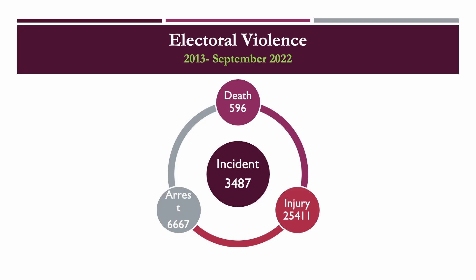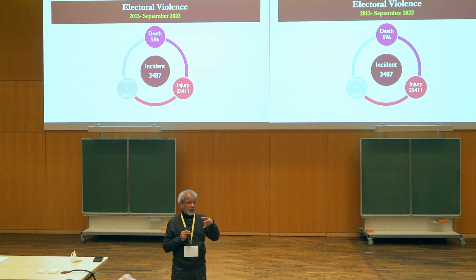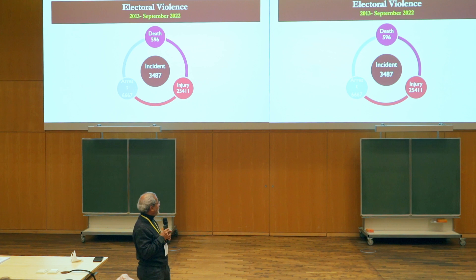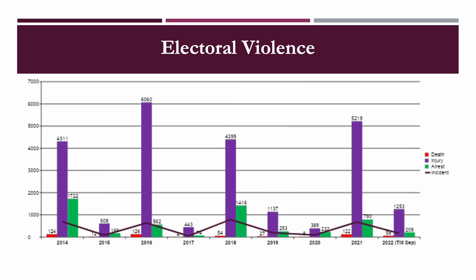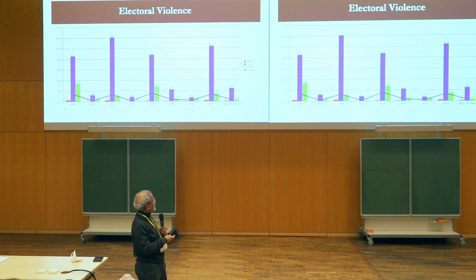Similarly, on electoral violence — this is something that developing countries normally have, but now even the United States is having electoral violence. In the last 10 years you have 596 deaths, which should not be a big issue in over 10 years. If you look at gun violence deaths every year in the United States — 40,000 people — then 596 over 10 years won't be taken very seriously. But it is still important to know about electoral violence. The trend shows it went up in 2016 and in 2021 during election years, and down in non-election years.